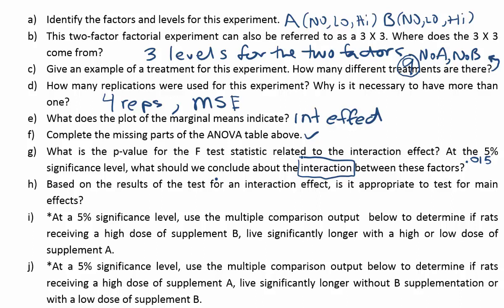For part H, it says, based on the results of the test for an interaction effect, is it appropriate to test for main effects? We're going to say no here because there appears to be an interaction effect. There seems to be an interaction effect, so we won't bother to test for main effects in this case.